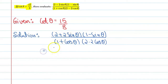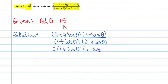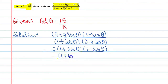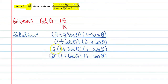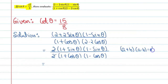Then we will get 2 into 1 plus sine theta, and this is 1 minus sine theta. Here we will get 1 minus cos theta. This and this 2 will get cancelled. Now let's look at the algebraic identity: a plus b into a minus b is equal to a squared minus b squared.